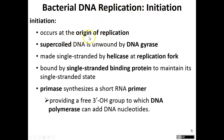Replication starts at a region called the origin of replication, located at the replication fork. DNA is supercoiled, so it first has to be unwound by DNA gyrase, then unzipped by DNA helicase. Once the DNA is single-stranded, an RNA enzyme called primase lays down a short strand of RNA called an RNA primer. This allows DNA polymerase to bind. This occurs on both the three-to-five prime strand and the five-to-three prime strand.